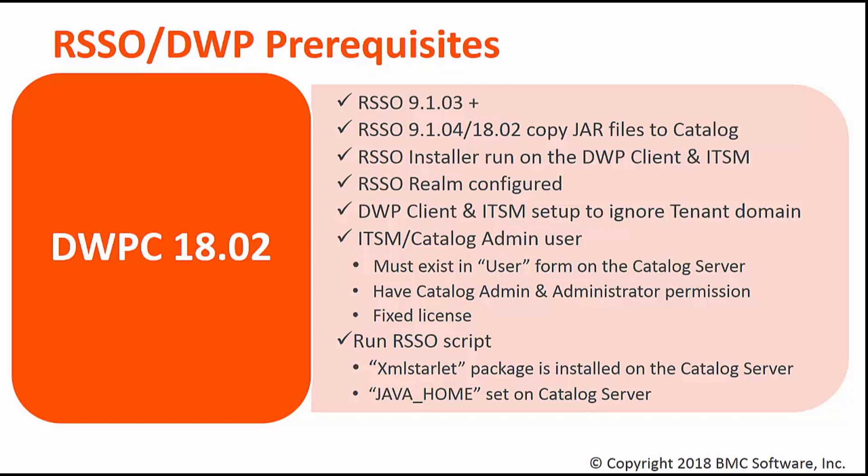The overall procedure to configure RSSO is very straightforward. The first thing we need to do is install and set up the RSSO server. Then we'd need to run the RSSO installer on the mid tier, the AR server, and the DWP Tomcat server. And to make RSSO aware of the applications, we then need to group them into a realm within RSSO admin.